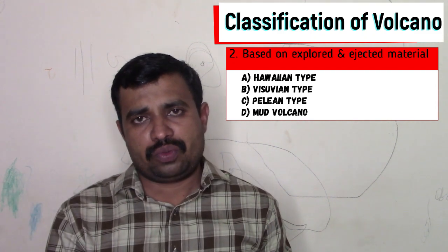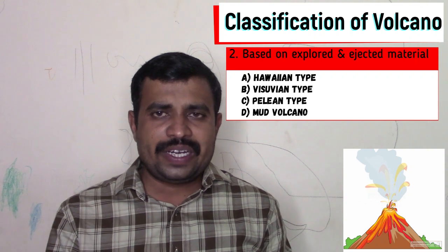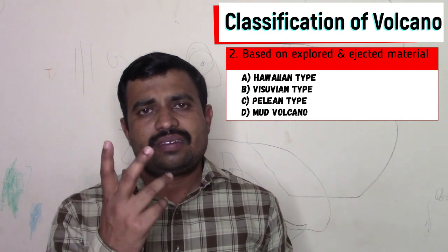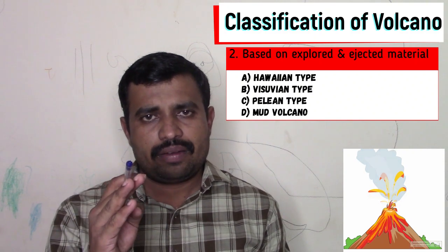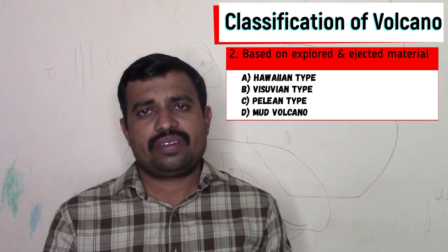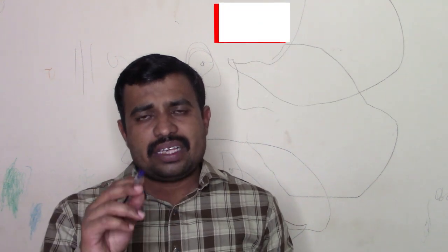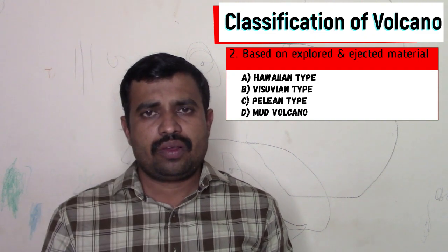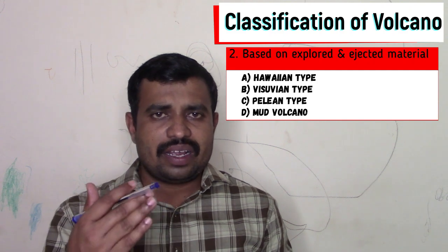The second type is the Vesuvian type of volcano. These volcanoes are very rare and very devastating. When the explosion takes place, the ejected material spreads into the surrounding area and looks like a cauliflower. Vesuvius is situated 11.2 kilometers from Naples, and the height of its crater is 1220 meters above mean sea level. Because of this type of volcano, three cities were destroyed in 79 AD. The products through this type include volcanic bombs and ash, and the magma is more viscous than the Hawaiian type.